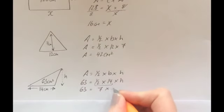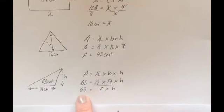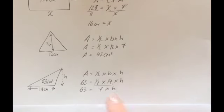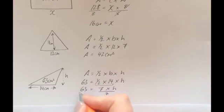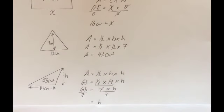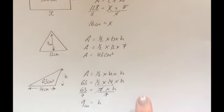Now it becomes much clearer what to do: if 7 times something is 63, think back to working with equations. To get h on its own, divide by 7 on both sides. So 63 divided by 7 is 9 — h is on its own. The height is 9 centimeters. That's how we tackle missing lengths with triangles.